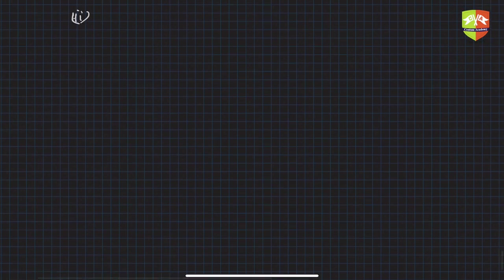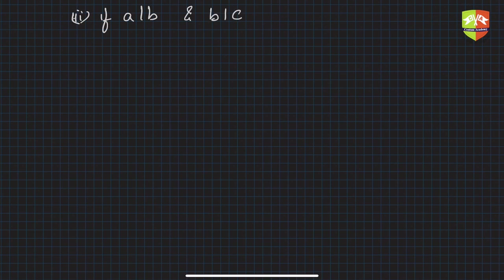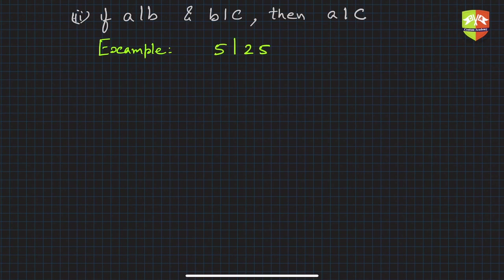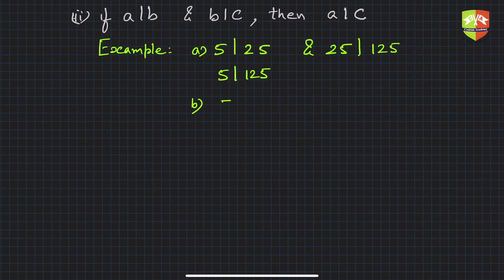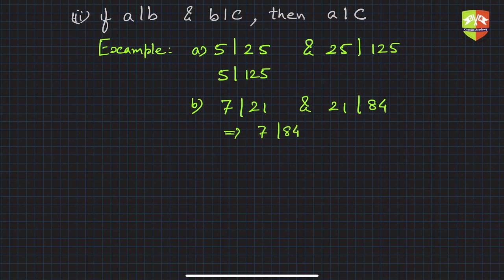The second sub-part says: if a divides b and b divides c, then a divides c. For example, 5 divides 25 and 25 divides 125, so 5 divides 125 — that holds true. Another example: 7 divides 21 and 21 divides 84, so 7 divides 84 — it holds.